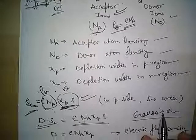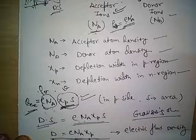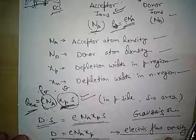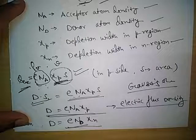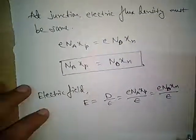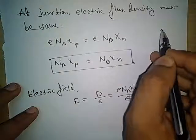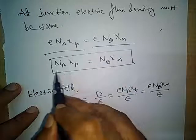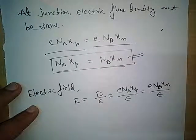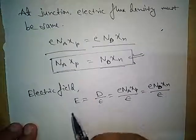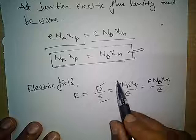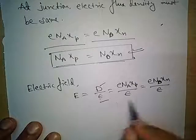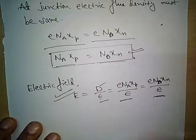From D·S equals charge enclosed, S cancels out, so the electric flux density at the junction from the p-side is e·na·xp. Similarly, from the n-side the result is e·nd·xn. At the junction, these two electric flux densities must be equal, since it is a single point. Therefore, na·xp equals nd·xn — this is the well-known charge neutrality relation. The electric field is then determined by dividing the electric flux density by permittivity: E equals e·na·xp divided by epsilon, or equivalently e·nd·xn divided by epsilon. Using either formula we can find the peak electric field at the junction.